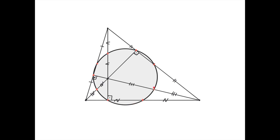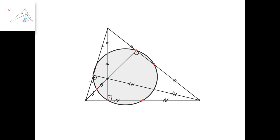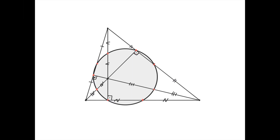This here is the 9-point circle for a triangle, or the Euler circle. It passes through these 9 really special points marked in red. Now we'll break this down and we'll prove that this circle exists. So we have a triangle, and this is its orthocenter. So this is an altitude, this is an altitude, and this is an altitude. These points are the feet of the altitudes, and the Euler circle passes through them.